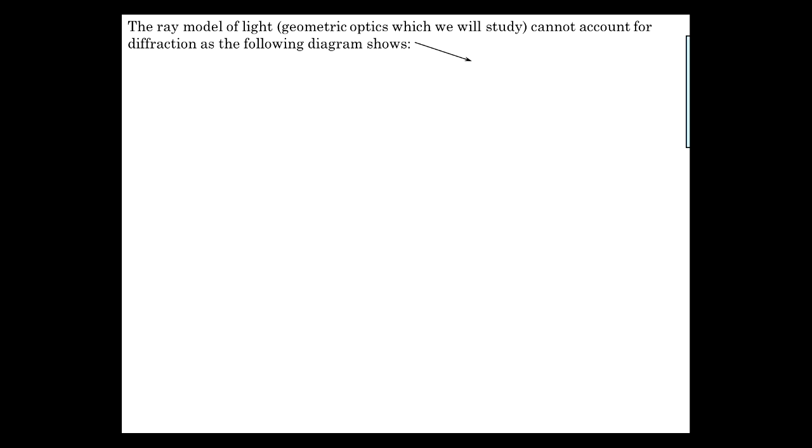So the Huygens principle does a real nice job of explaining how light bends around corners. The ray model, on the other hand, does not explain this very well. Although it does explain how basic optical systems function, and we'll look into that later.